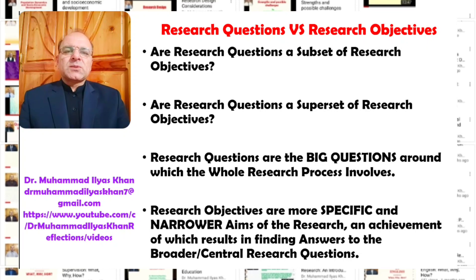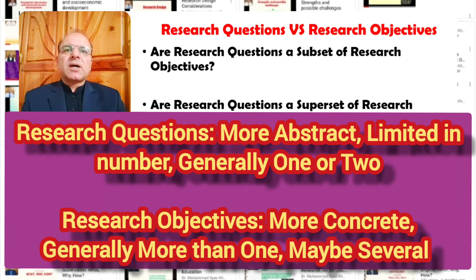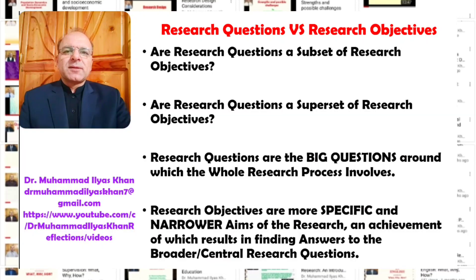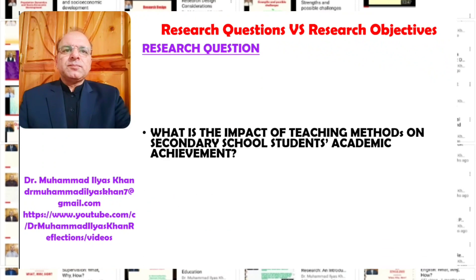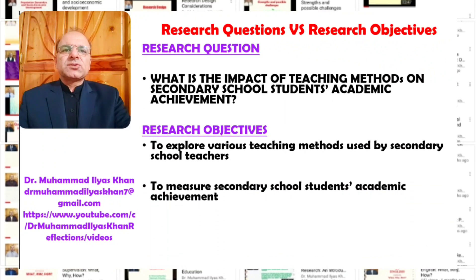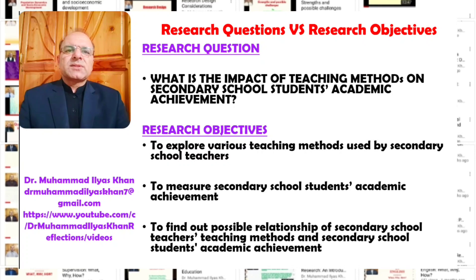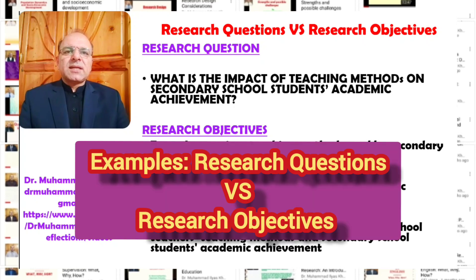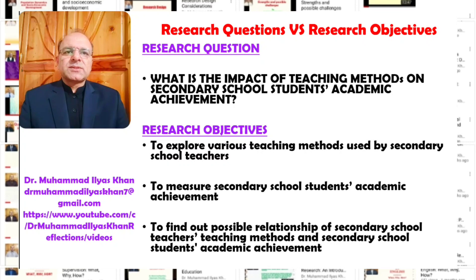In this sense, research questions are bigger in comparison to research objectives. When we formulate and achieve research objectives, we are actually trying to find answers to our bigger research questions. Here are some examples of research questions and research objectives. Research objectives are a subset of research questions that can ultimately help in finding answers to them.